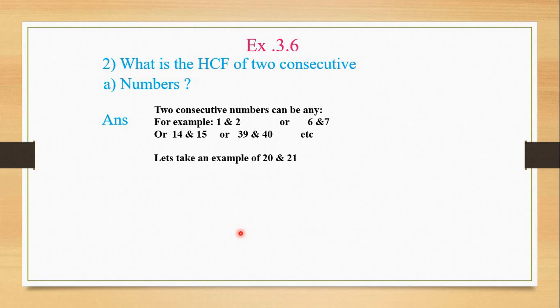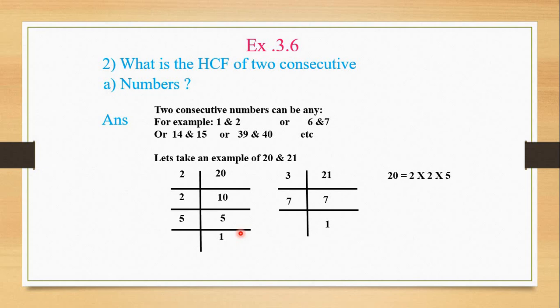In this example, I have taken 20 and 21. Let's do the factorization of 20. We have 2 × 10, 2 × 5, and 5 × 1. We'll do the factorization of 21: 3 × 7 and 7 × 1. Now we'll list these factors. First, 20's factors: 2 × 2 × 5. And 21 is 3 × 7. What are common? 2 and 5 in 20, and 3 and 7 in 21. We don't have any common factors in 20 and 21. Since there are no common factors, the HCF will always be 1.